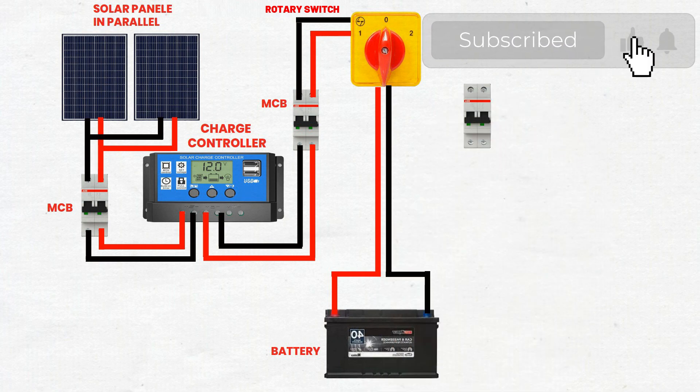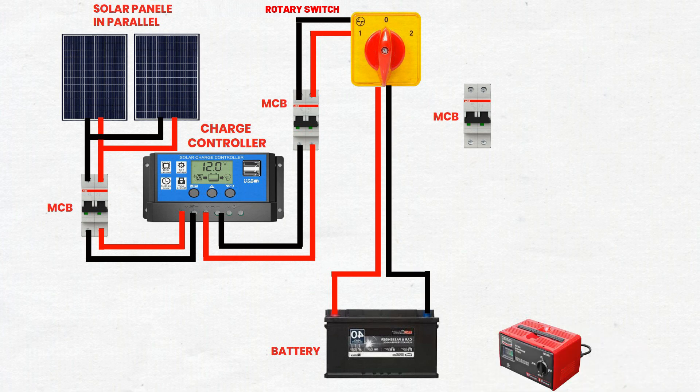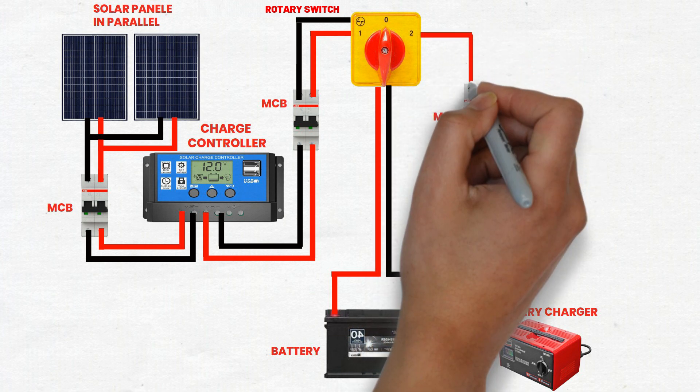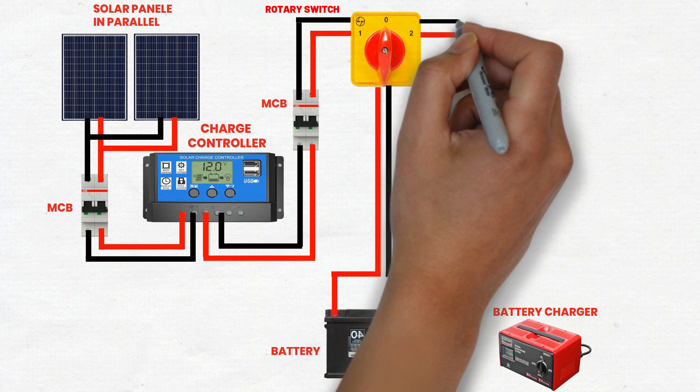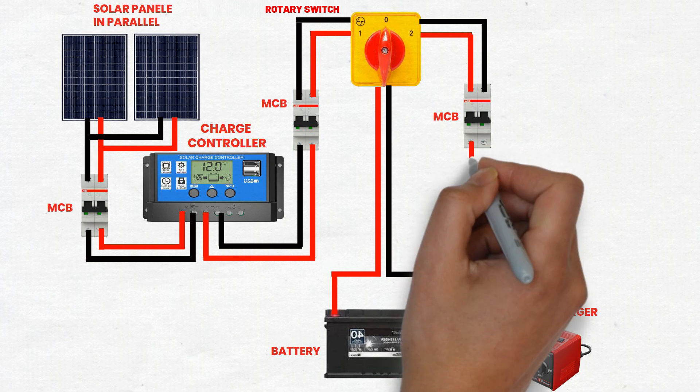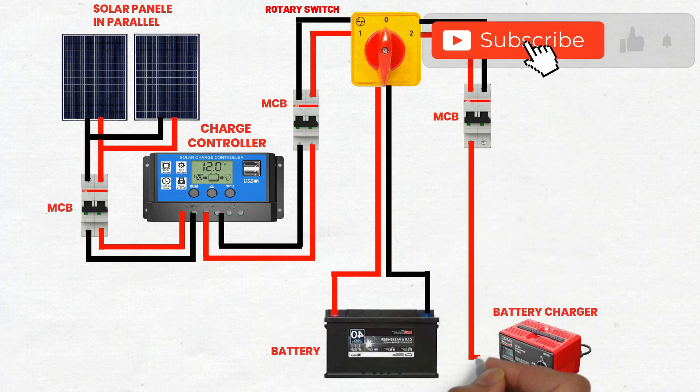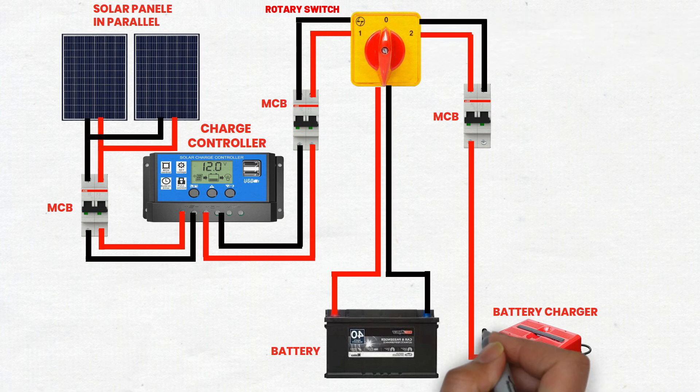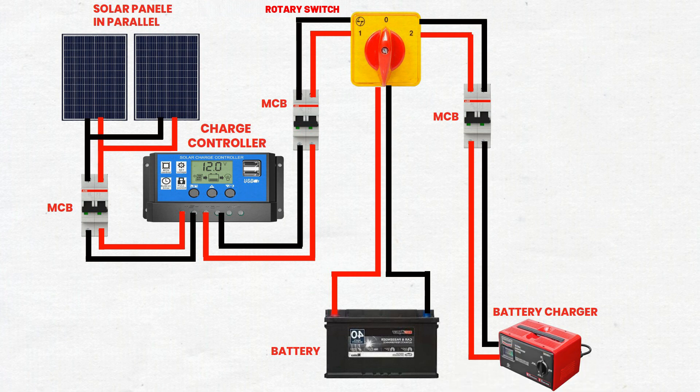Step 6: Connect rotary switch to third MCB. Run cables from the rotary switch to the input terminals of the third MCB. The battery charger maintains the battery charge level, especially if additional charging from an AC source is needed. Connect MCB to charger. Use cables to connect the output terminals of the third MCB to the input terminals of the battery charger. This allows an external AC source to charge the batteries if solar power is insufficient.